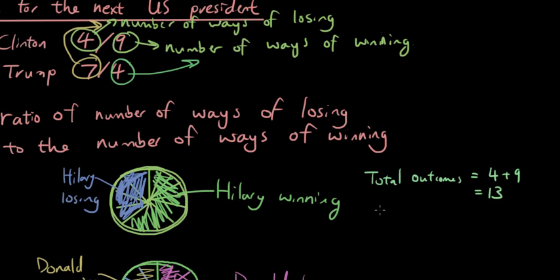And then for the probability of winning, it's just going to be the number of ways of winning, which is nine over 13. And the probability of Hillary losing is just four out of 13. And you can see winning and losing, they both add up to 13 out of 13, which is one.